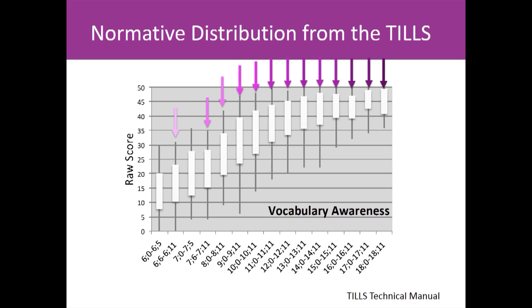As children get older, they tend to know more and more of the words that are on the test. Their means get higher, but more importantly, look at the spread of scores represented by the whiskers. There are fewer scores above the one standard deviation boxes than there are below. In fact, this becomes more uneven with age. This is not a property specific to the TILs; it is a property of many tests that measure skills that develop with age. These two types of percentile scores commonly used by tests are anchored to either a normal distribution or the test's normative distribution.